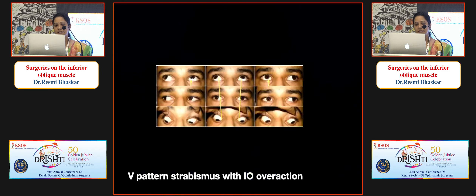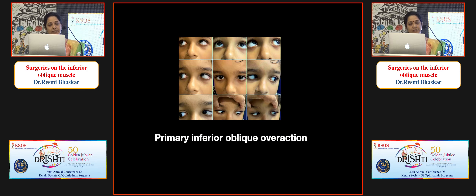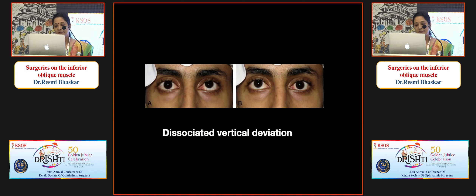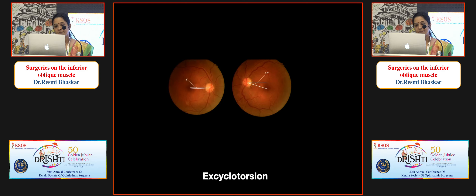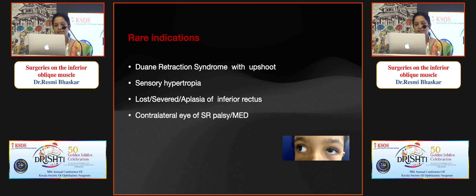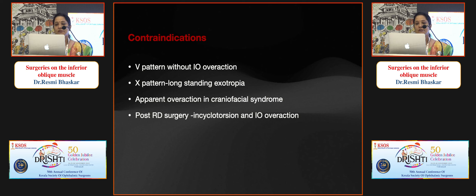Indications for inferior oblique surgery include V pattern strabismus with inferior oblique overaction, primary inferior oblique overaction as seen in infantile esotropia, exotropia, and accommodative esotropia; dissociated vertical deviation, superior oblique palsy, excyclotorsion, nystagmus with head tilt. Rare indications include Duane's retraction syndrome with innervational upshoots, sensory hypertropia, lost or severed inferior rectus, contralateral eye in superior rectus palsy or MED. Contraindications include V pattern without inferior oblique overaction, X pattern in long-standing exotropia, craniofacial syndromes, and post-RD surgery with incyclotorsion and inferior oblique overaction.